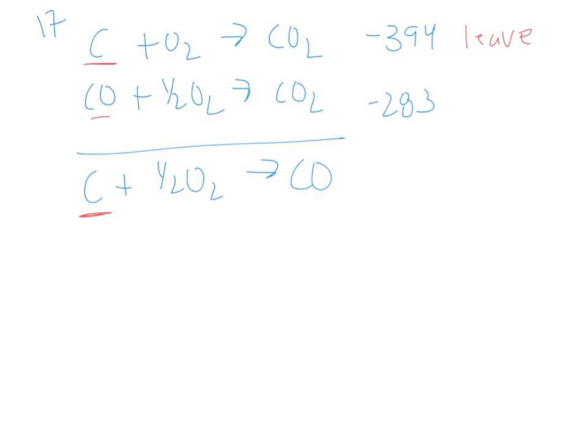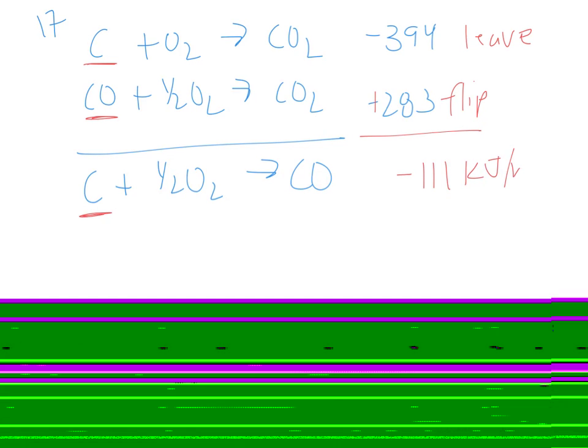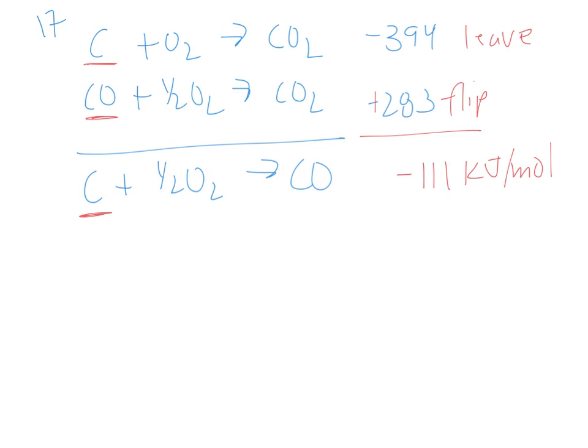The second equation, though, my CO is the right amount, but I need to flip this one to have my equations add up and the correct things cancel out. So when I flip it and do the math, I'm going to end up with negative 111 kilojoules per mole as my delta H for number 17.